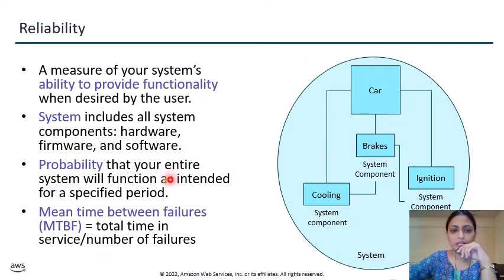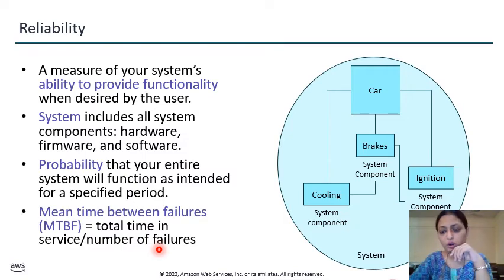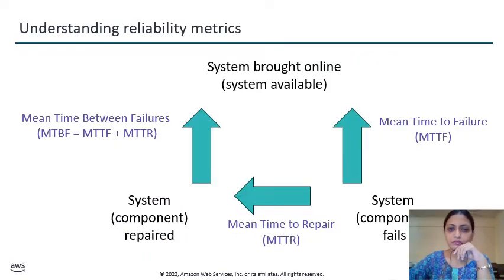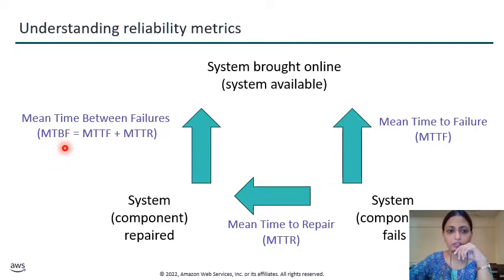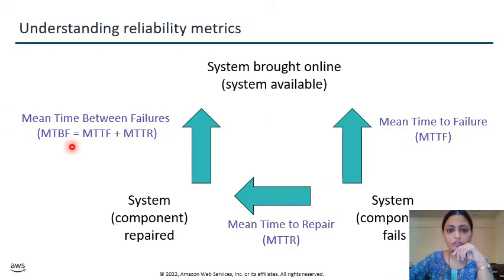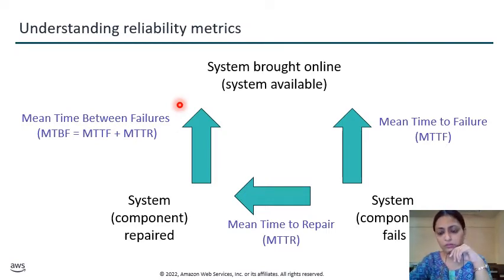Probability refers to what is required by your system functionality in a particular specified period. Here we use MTBF — Mean Time Between Failures — which calculates the number of times your system or services have failed. You can calculate it with the formula: MTBF = MTTF + MTTR, where MTTR stands for Mean Time to Repair and MTTF stands for Mean Time to Failure. With these metrics you can calculate the failure rate of a service.